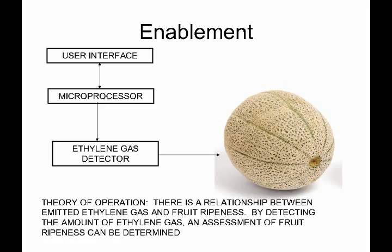So here, we've added a little more detail to give it some enablement. We have a theory of operation: there is a relationship between emitted ethylene gas and fruit ripeness. And by detecting the amount of ethylene gas, an assessment of fruit ripeness can be determined — so we can know if we detect a certain amount of ethylene gas whether the fruit is either good or not good. To implement this, we'll have a microprocessor that will interface with an ethylene gas detector. And there will be some kind of user interface, which could be as simple as a green light for good fruit and a red light for bad fruit.